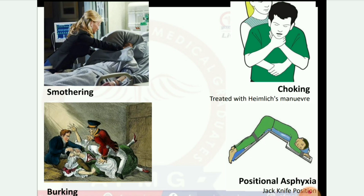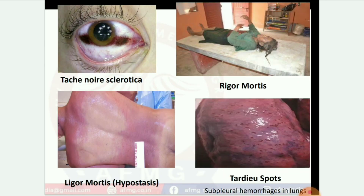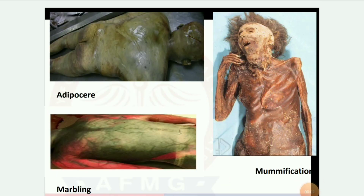Next image: Tardieu's spots (subpleural hemorrhages in lungs), rigor mortis, livor mortis (hypostasis), and Tardieu's spots. Adipocere image, marbling, and mummification.